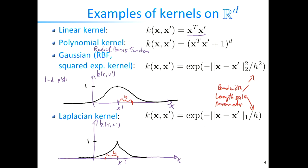Last lecture also covered the Gaussian kernel — a similarity function that depends on the distance of two points, defined as the exponentiated negative squared distance scaled by a bandwidth parameter h. We also discussed the Laplacian kernel, which uses the L1 distance rather than the squared Euclidean distance. The names come from analogs with the Gaussian and Laplace distributions; the Gaussian kernel also goes by RBF or squared exponential.